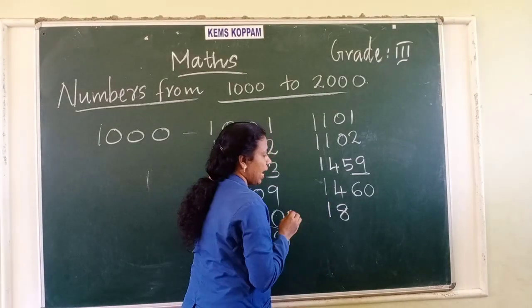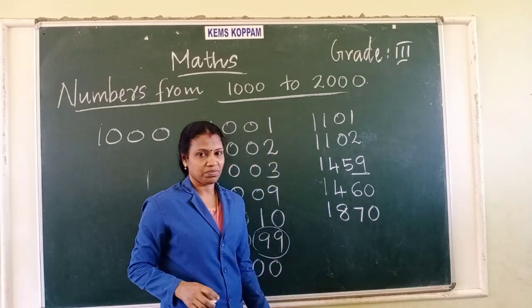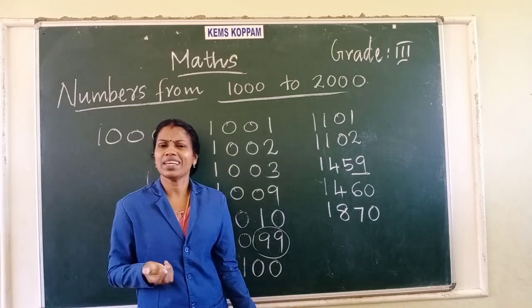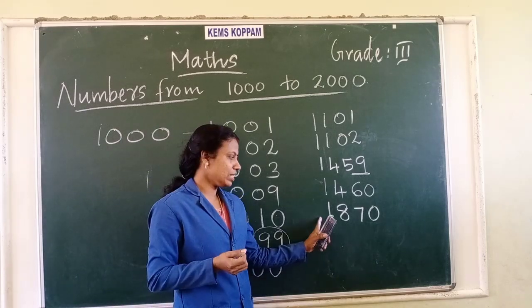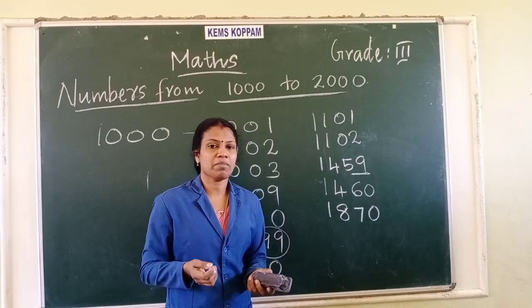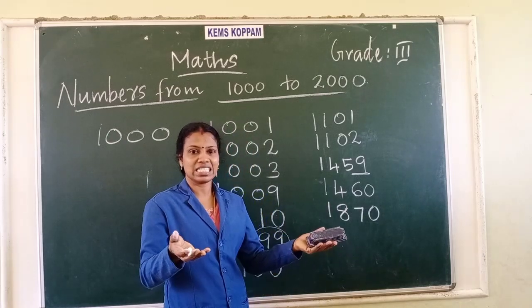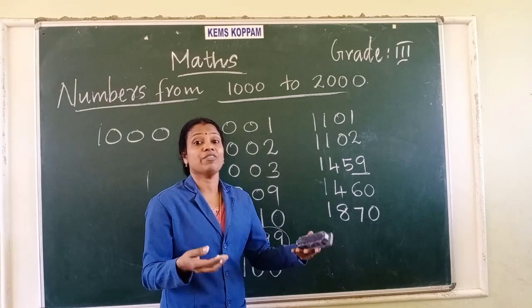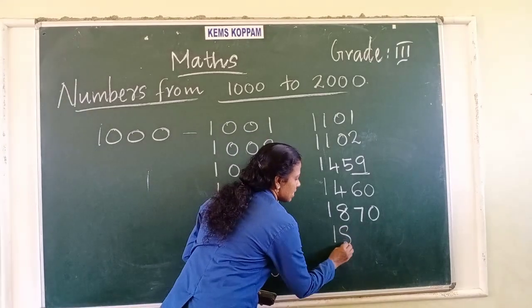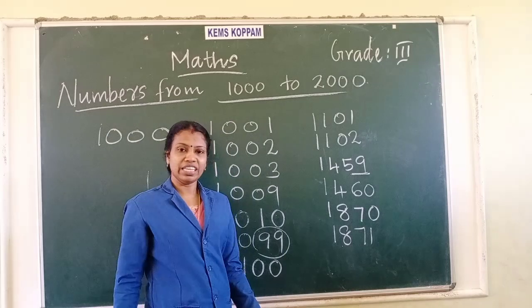One more example: 1,870. What would be the next number? 70 is the last number, so what's next? 71. So after 1,870 comes 1,871.